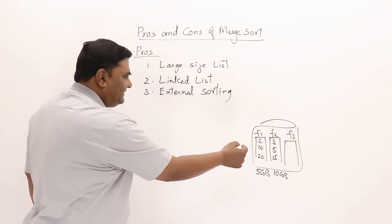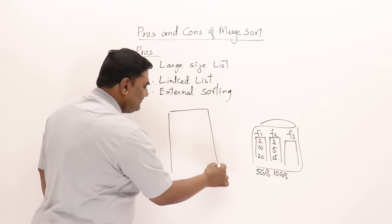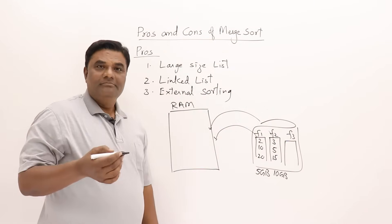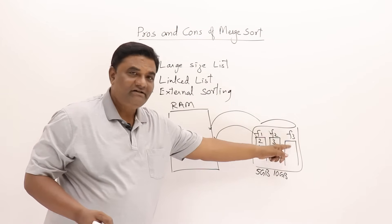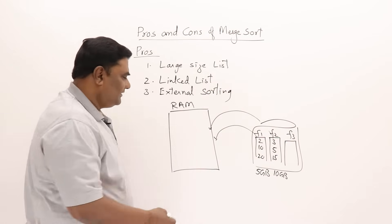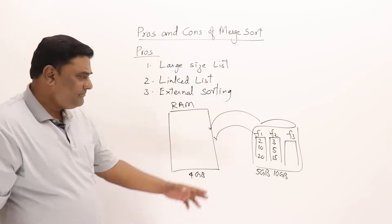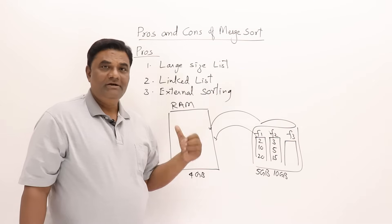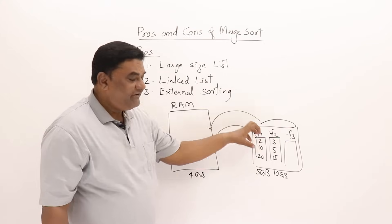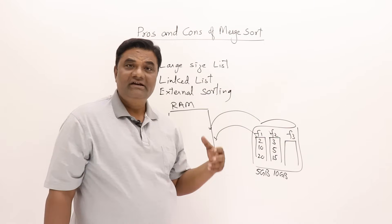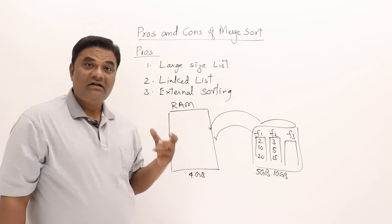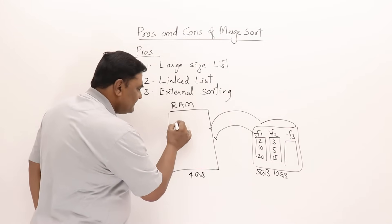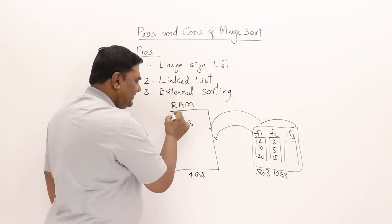The data from those files has to be brought into main memory (RAM) for merging. But if my RAM is only 4 GB, I cannot bring the entire 5 GB or 10 GB files at once. So instead I bring the files in pieces — in runs or chunks — a few blocks at a time.